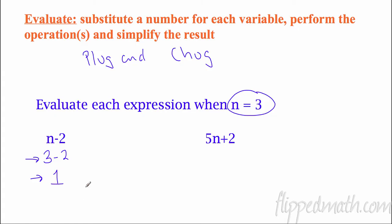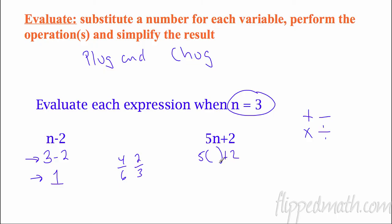Do I have to simplify this to solve it all the way? Of course you do. If I have a fraction like four over six, do I have to simplify it all the way? Of course — that's part of evaluating. Over here we have five N plus two. Now this one's kind of tricky — you don't see any operation between the five and N. When I see a number and a letter right next to each other with no operation, it is always multiply, and we can use parentheses for multiply. I'm going to multiply first: five times three is 15, plus two is 17. That is evaluating — I plugged it in and simplified the result all the way down.